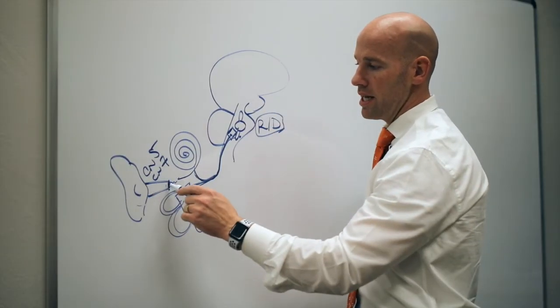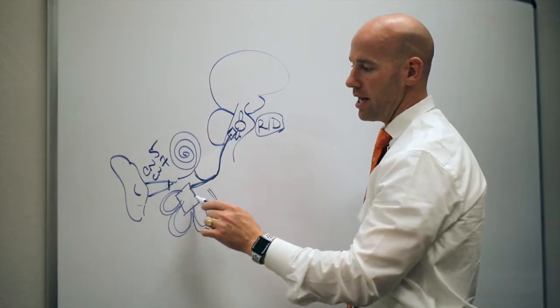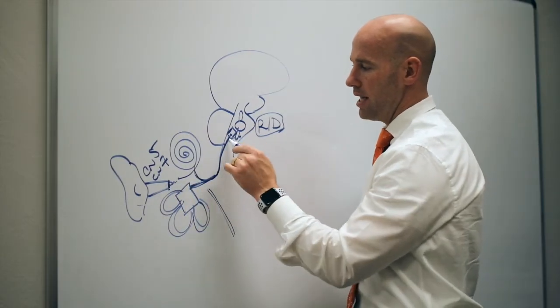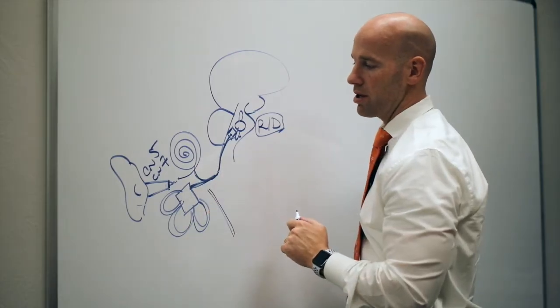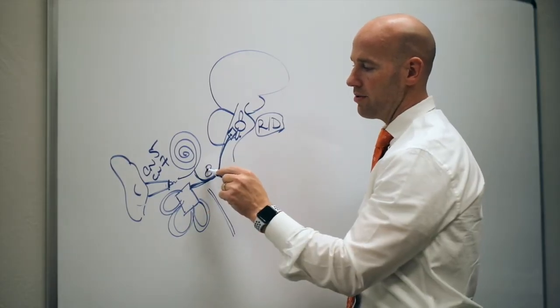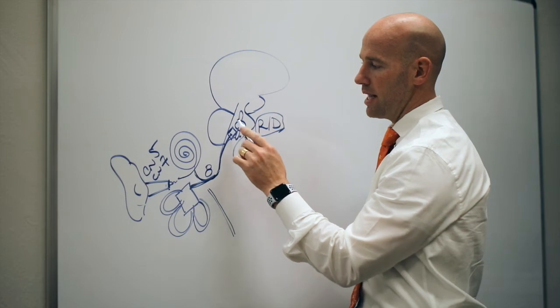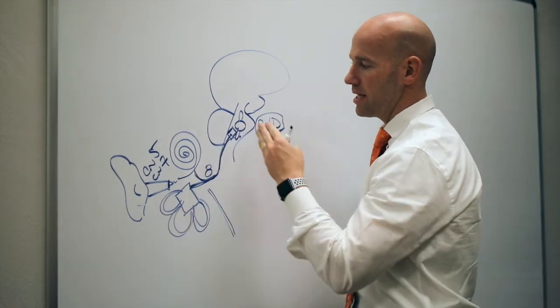When you use the pressure gradient and use the tympanic membrane, you get higher and more input into this vestibular cochlear cranial nerve 8, which then alters the brainstem's function, one side to left side.